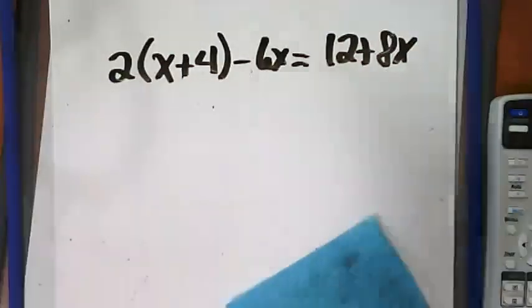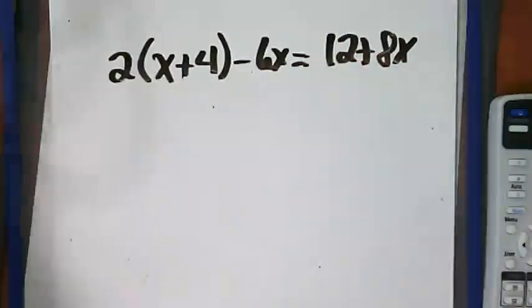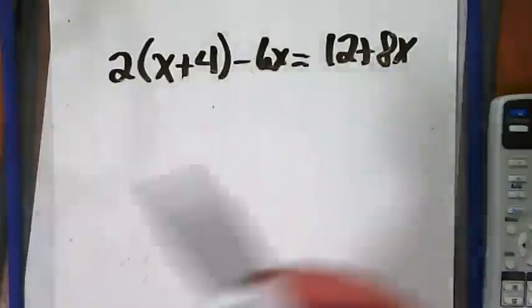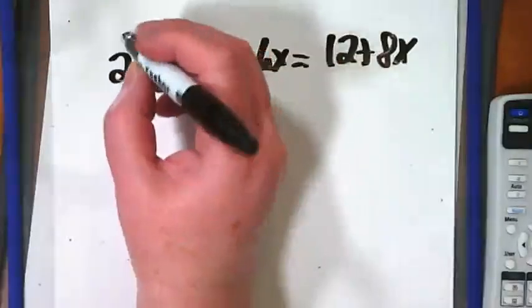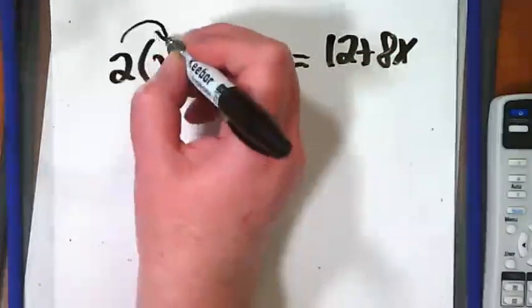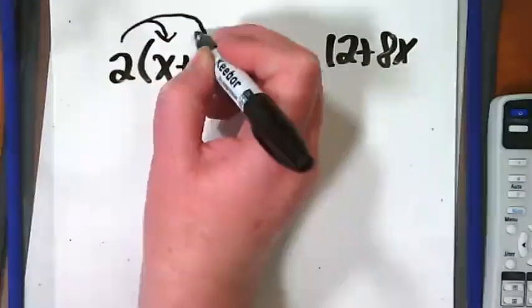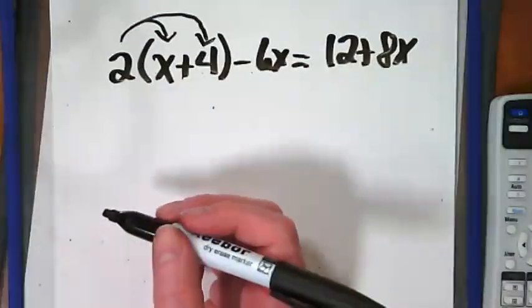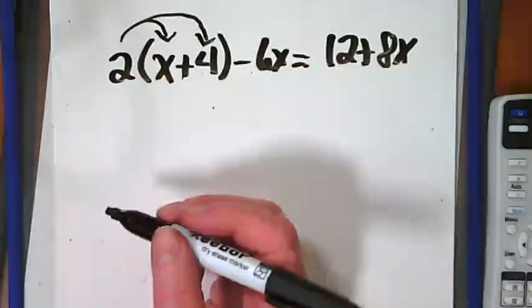I gave you where you had to distribute. We have to start with distribution here too. I always think of this, I picture these arrows in my head, that I'm going to share that two with both of the things inside the parentheses.